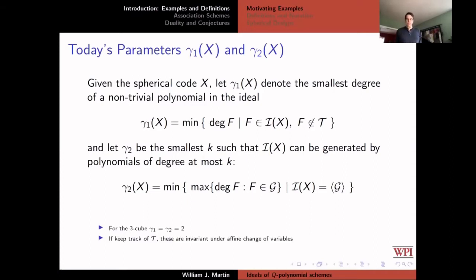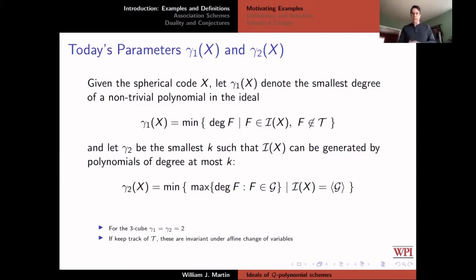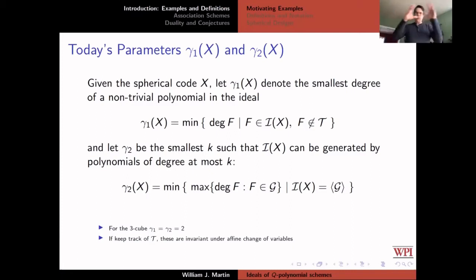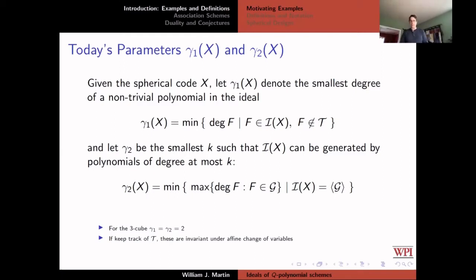For the 3-cube, the vertices span R3, so they don't live in a hyperplane. The smallest degree of a non-trivial polynomial is 2, and I can generate the entire ideal using polynomials of degree 2. I'm also not going to worry about affine transformations — as long as I keep track of what the trivial ideal is, I'll play fast and loose with changes of coordinates.